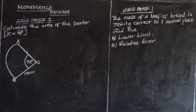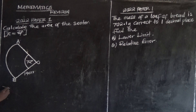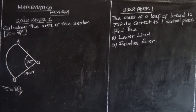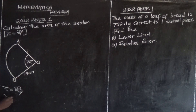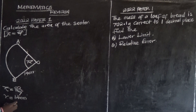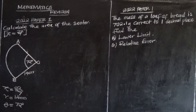First, look at what we have. π has been given as 22/7. The radius of this sector is 14 centimeters, and the angle theta is 72 degrees. What we want is the area of the sector.